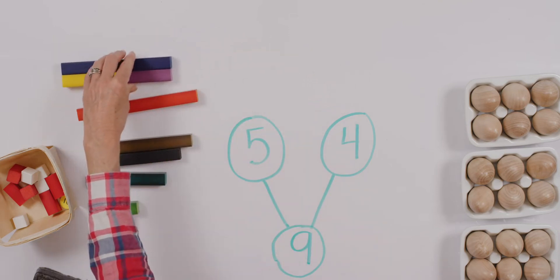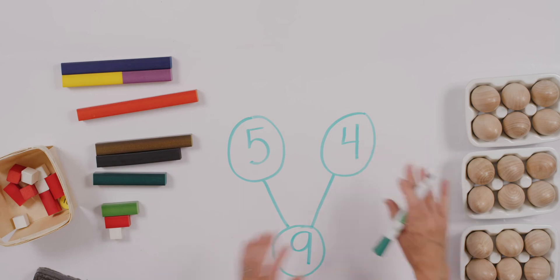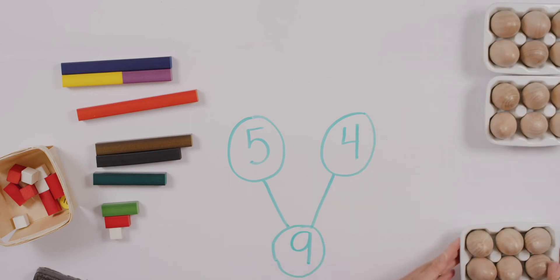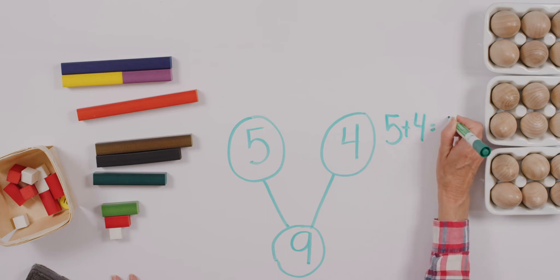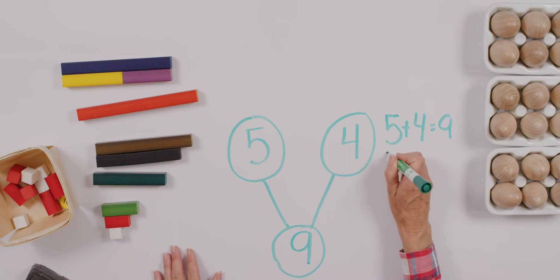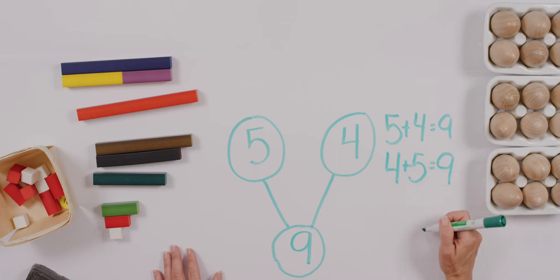Now we know that there are some equations that we could write from here too. Or we can say that they're expressions if we don't write an equals sign. So I can say five plus four equals nine. And I can also flip that around because when we're doing addition, it doesn't matter which way our parts go. They can be interchangeable. So I can say four plus five equals nine.